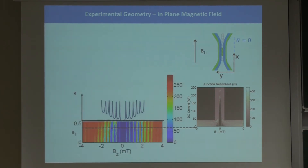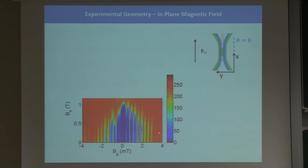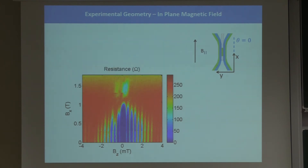Instead of looking at the full image at any given magnetic field, the really interesting parameter is the in-plane magnetic field, which we vary up to about one Tesla — note the perpendicular field is only in the millitesla range. As we increase the in-plane field, nothing really happens to the pattern at first, but up at about one Tesla the entire pattern disappears — the system looks normal — and then it reappears. Something is oscillating as a function of the in-plane magnetic field that kills superconductivity and revives it again.